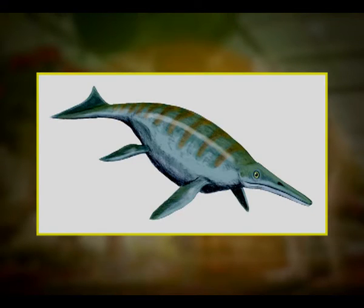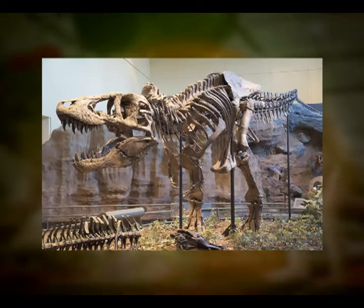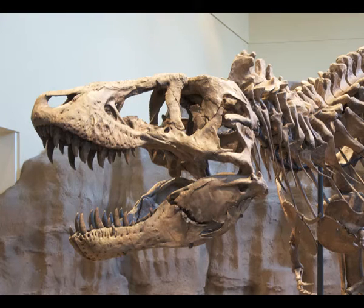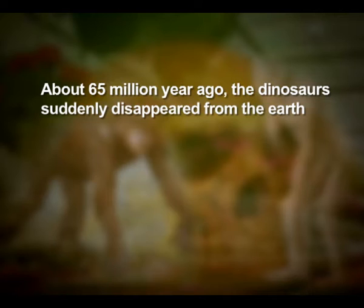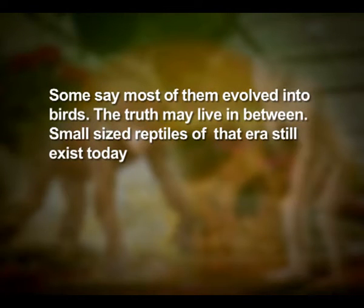For example, Ichthyosaurus. The land reptiles were, of course, the dinosaurs. The biggest of them, Tyrannosaurus rex, was about 20 feet in height and had huge, fearsome dagger-like teeth. About 65 million years ago, the dinosaurs suddenly disappeared from the earth. We do not know the true reason — some say climatic changes killed them, some say most of them evolved into birds; the truth may lie in between.